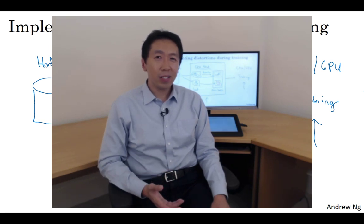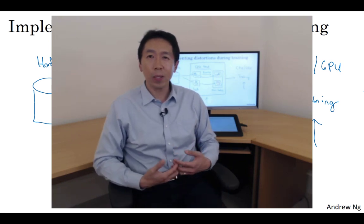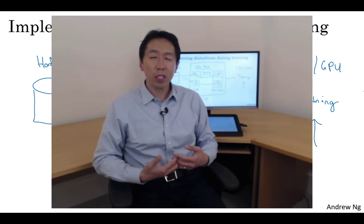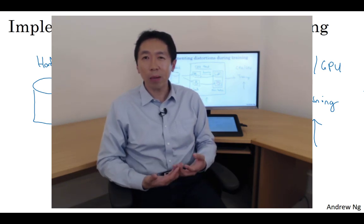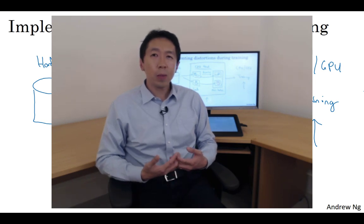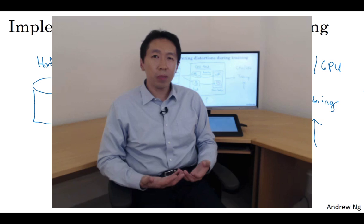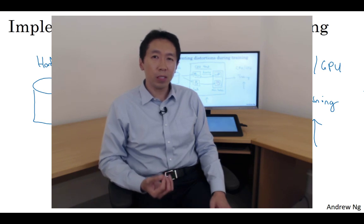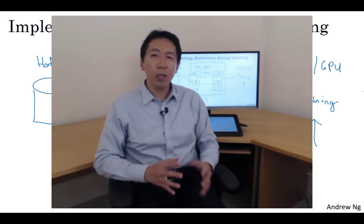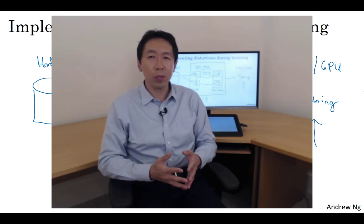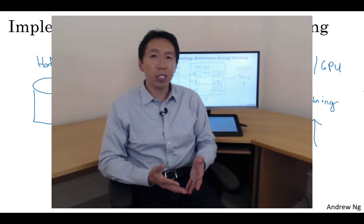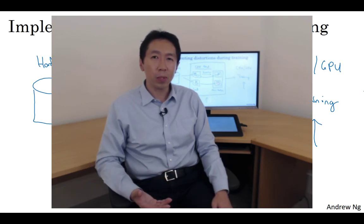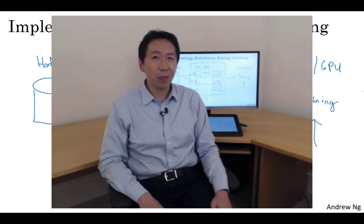So, that's it for data augmentation. And similar to other parts of training a deep neural network, the data augmentation process also has a few hyperparameters, such as how much color shifting do you implement and exactly what parameters you use for random cropping. Similar to elsewhere in computer vision, a good place to get started might be to use someone else's open source implementation for how they use data augmentation. But of course, if you want to capture more invariances that you think someone else's open source implementation isn't, it might be reasonable to also tune these hyperparameters yourself. So, with that, I hope that you'll be able to use data augmentation to get your computer vision applications to work better.